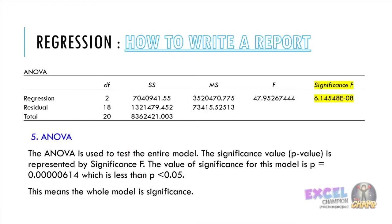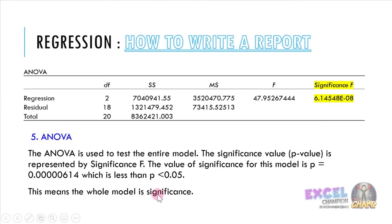Next, ANOVA is used to test the whole model in regression analysis. We need to read the significance F. The p-value for this model is 0.000614, which is less than 0.05. This means that the whole model is significant.